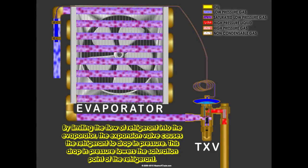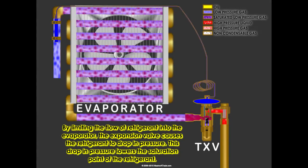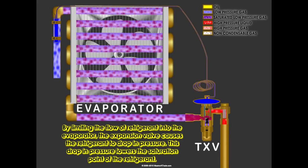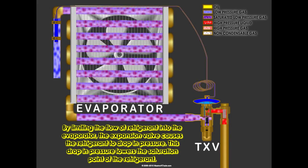By limiting the flow of refrigerant into the evaporator, the expansion valve causes the refrigerant to drop in pressure. This drop in pressure lowers the saturation point of the refrigerant.